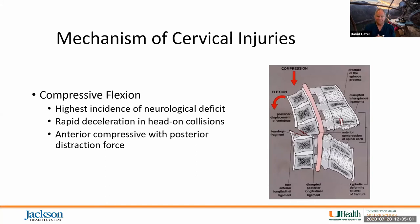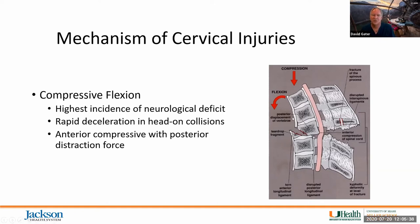Compressive flexion has the highest incidence of neurological deficits because of rapid deceleration. Think of two vehicles colliding head-on — the force generated to the head and neck results in anterior compression and a posterior distraction force, causing almost complete disruption of the entire three-column spine and subsequently significant neurological disruption because of the cord caught in between.